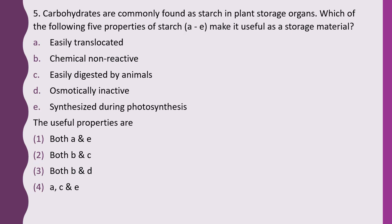Question 5. Carbohydrates are commonly found as starch in plant storage organs. Which of the following properties of starch makes it useful as a storage material? Properties listed: easily translocated, chemically non-reactive, easily digested by animals, osmotically inactive, synthesized during photosynthesis. The correct answer is option 3, both B and D. Starch is chemically non-reactive and osmotically inactive, which makes it apt for storage.